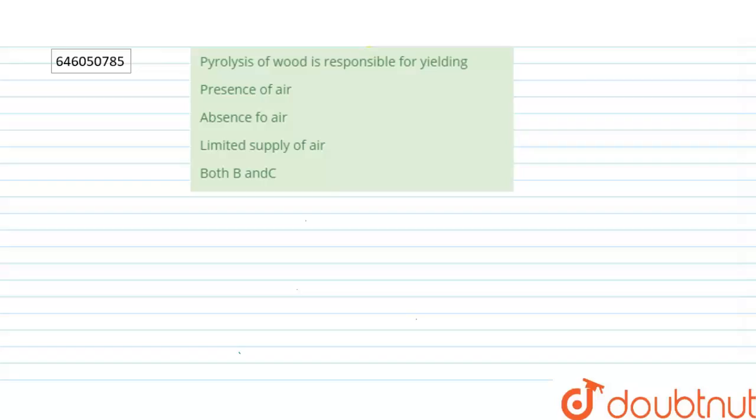The question says that pyrolysis of wood is responsible for yielding: presence of air, absence of air, limited supply of air, both B and C.